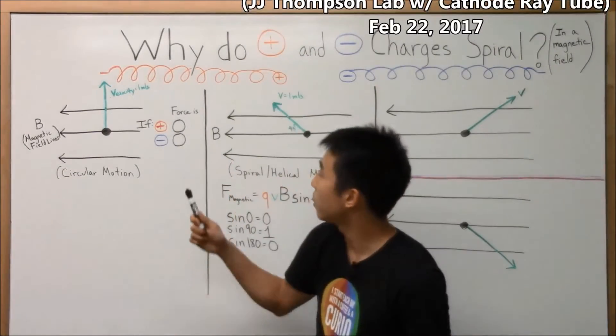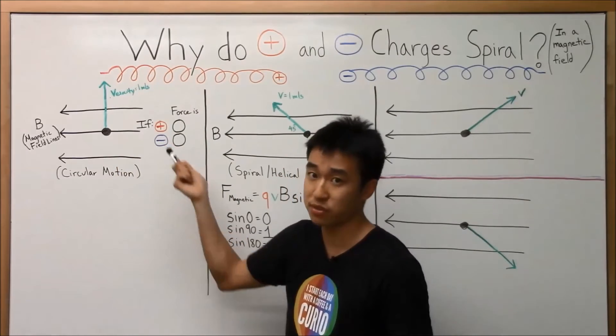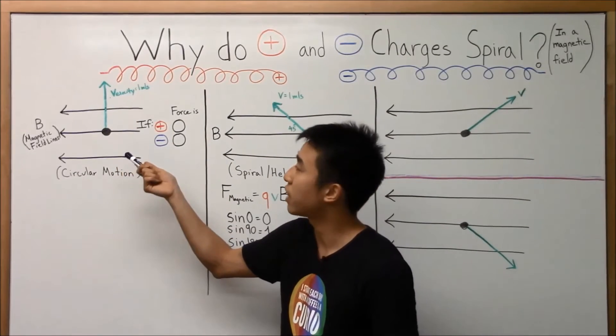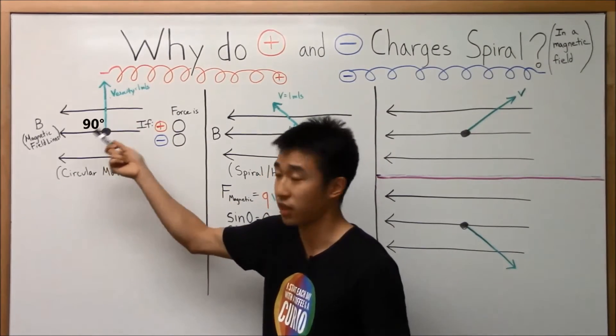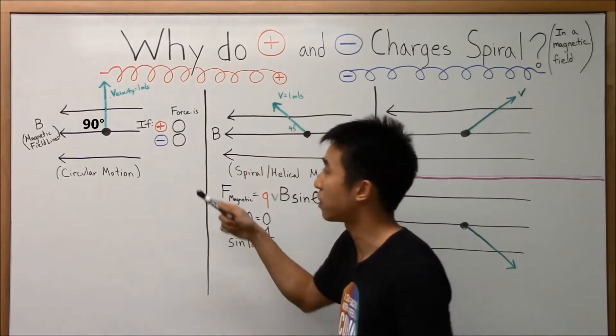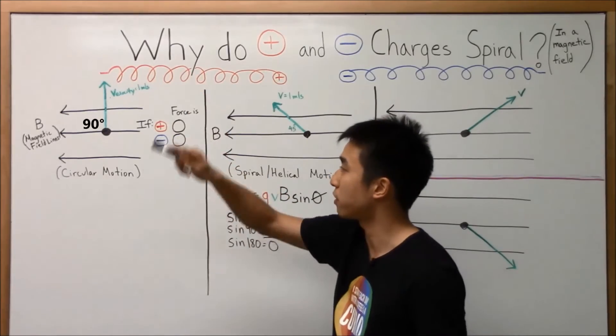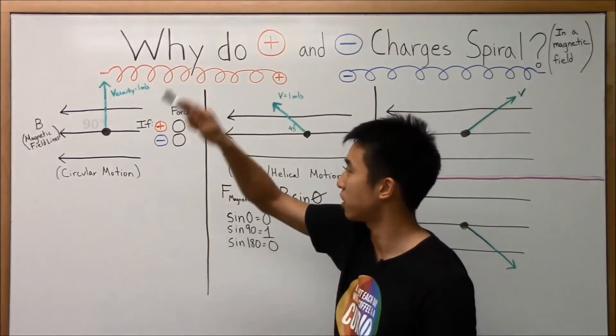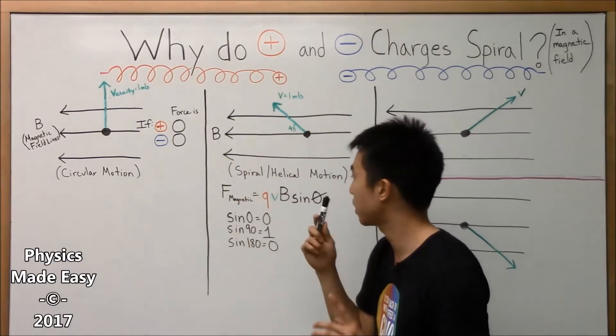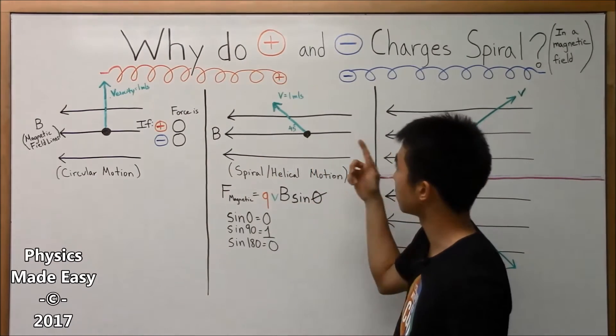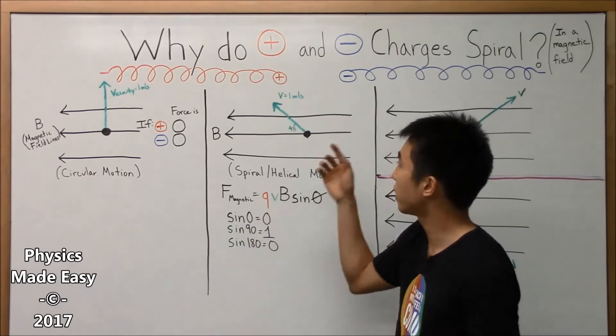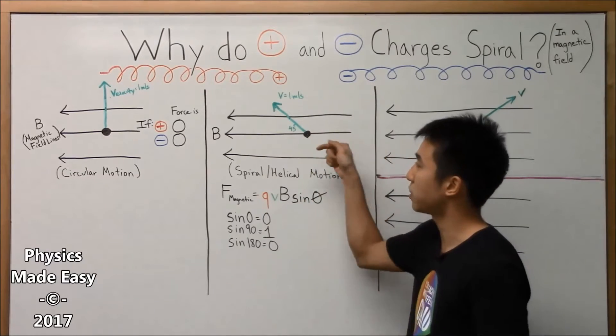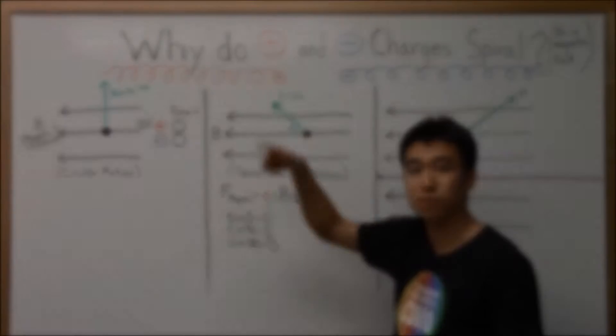Hopefully at this point you already know that when you have a charge, whether it's positive or negative, in a magnetic field and it's moving, when its velocity is perpendicular or at 90 degrees with a magnetic field, you'll have circular motion, either into the board or out of the board, depending if it's a positive or negative charge. And then when the angle between the velocity and magnetic field is anywhere between 0 and 90 degrees, like 45 degrees, it'll experience spiraling or helical motion.